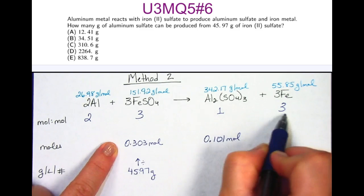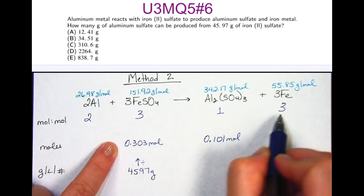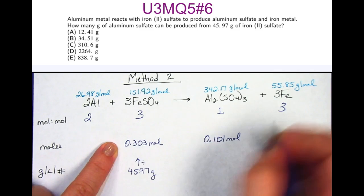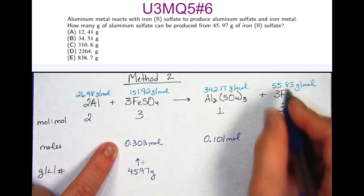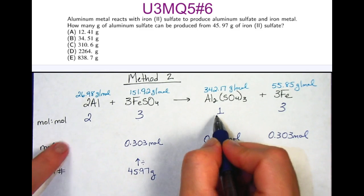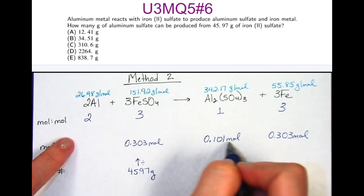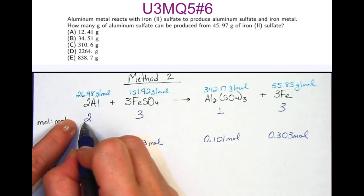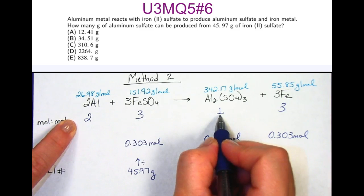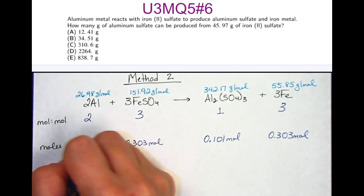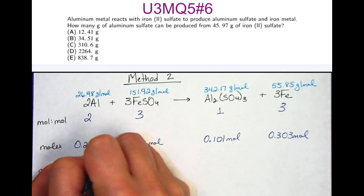Because this is a 3 to 3 ratio, then they're going to be the same amounts. So 0.303 is how many moles of iron we have. And then I can take this amount, 0.101, and because aluminum is twice as much as aluminum sulfate, then I can take this times 2 and get 0.202 moles.